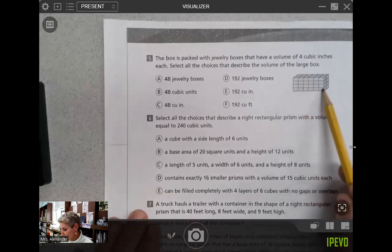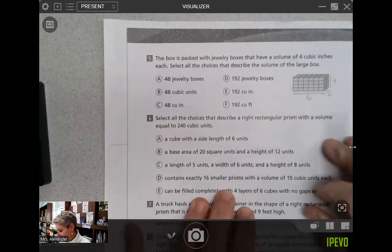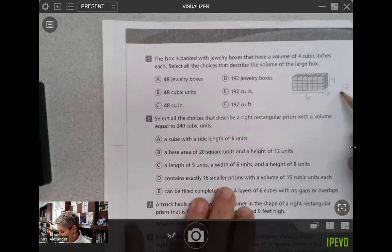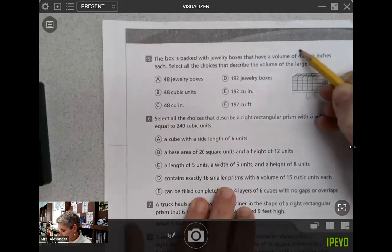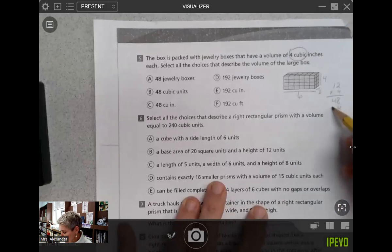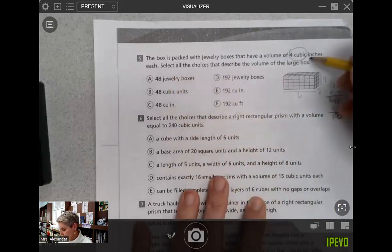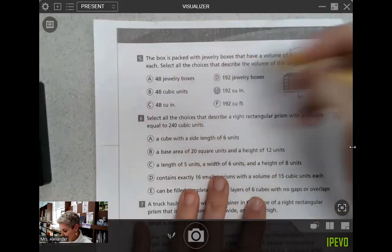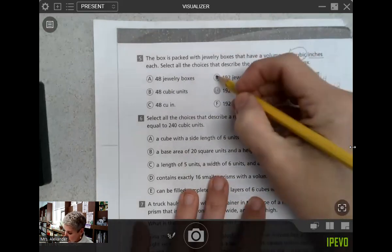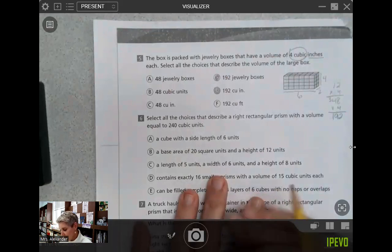One, two, three, four, five, six. There are six boxes in front. There are two rows of boxes and there are four layers. So if I do that work to find that volume, six times two is 12 times four is 48. But each of those boxes is four cubic inches on its own. So I'm going to take that times four. And I'm going to get 192. All the choices that describe the volume of the large box, so we're talking about cubic inches. I'm going to select 192 cubic inches. It is also 192 jewelry boxes. So that would tell us, I think we would do D and E in that case.